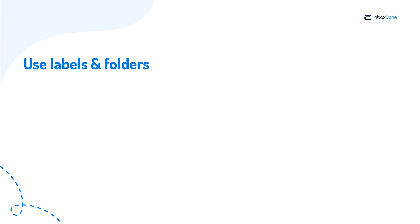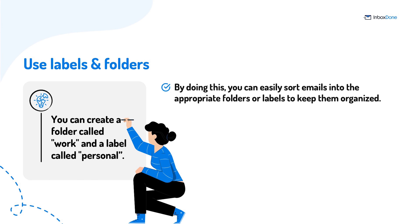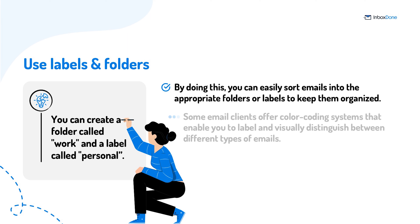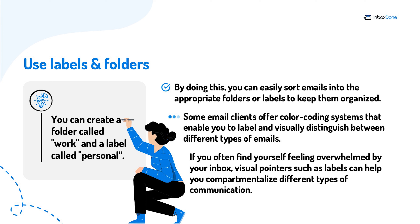Number three: use labels and folders. You can use labels and folders to keep your emails organized by topic. For instance, you can create a folder called "work" and a label called "personal." By doing this, you can easily sort emails into the appropriate folders or labels to keep them organized. Some email clients offer color coding systems that enable you to label and visually distinguish between different types of emails. Visual pointers such as labels can help you compartmentalize different types of communication.